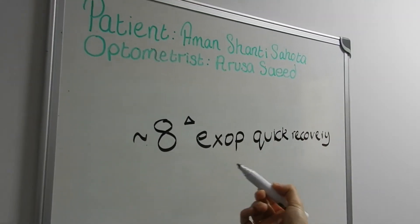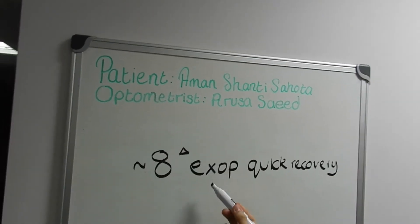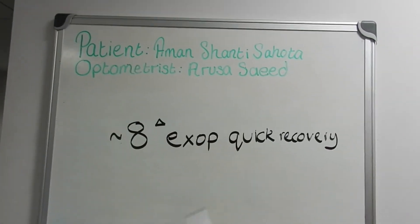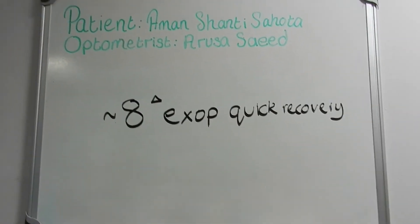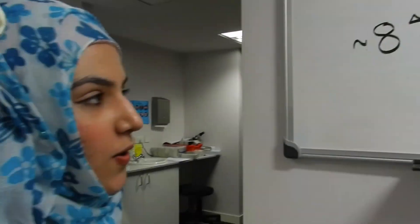The same applies if it were an esophoria — you would record esophoria and indicate what kind of recovery it was: quick, moderate, or slow.